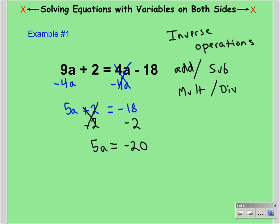Our last step to get a by itself is to remove the 5. Because 5 and a are next to each other, they're being multiplied. So we can divide by 5, which is the inverse of multiplication, and a equals negative 4 because a positive and a negative divided are always negative.